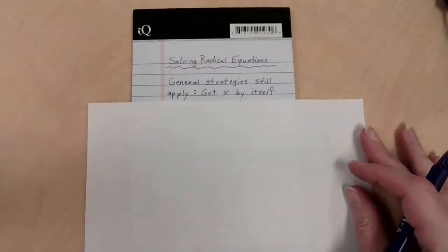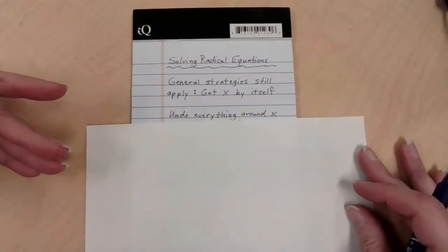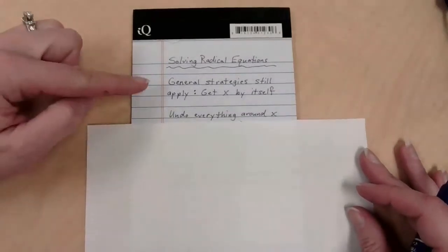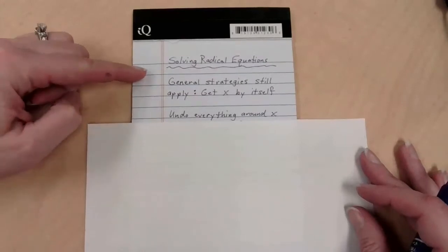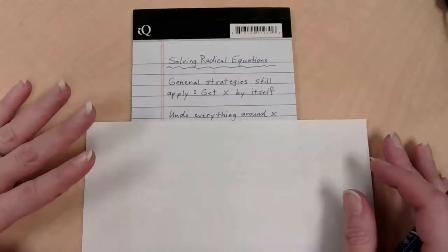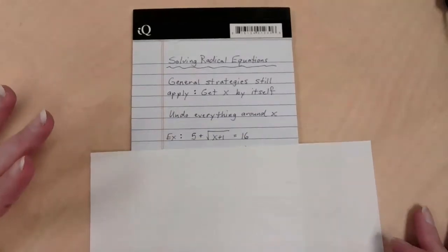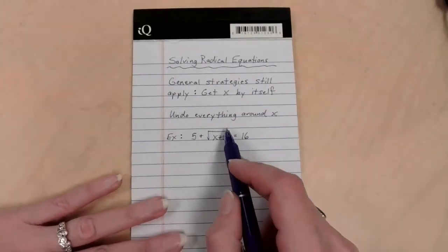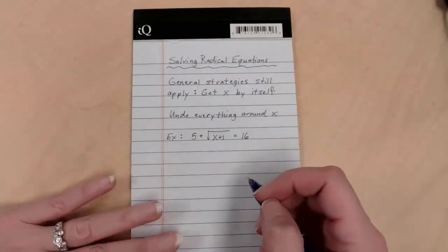How do we get the x by itself? If you just look at its core, we're trying to undo everything around the x. So if you can keep those ideas in your brain, solving radical equations is not going to be crazy different from solving other equations. All right, so I've got three examples for you today. First example is this. It says 5 plus the square root of x plus 1 equals 16. What makes it a radical equation? It has a radical sign. It has a square root in it.